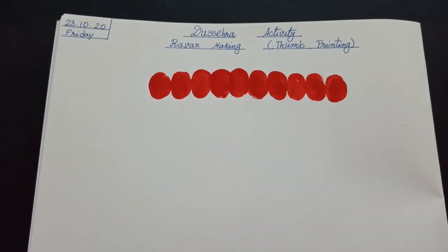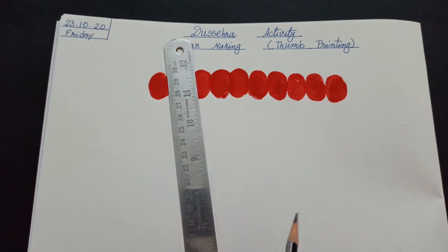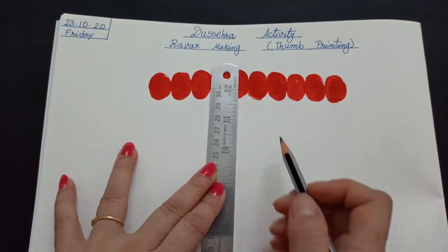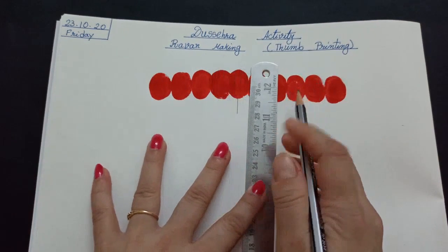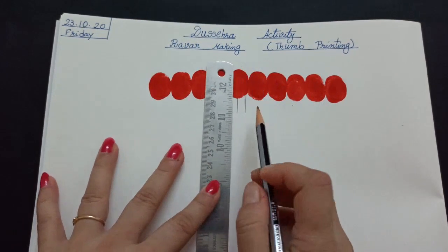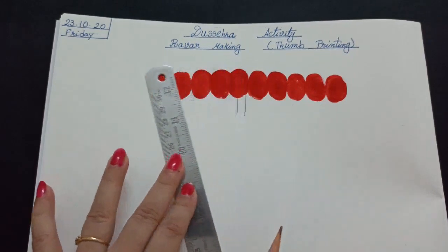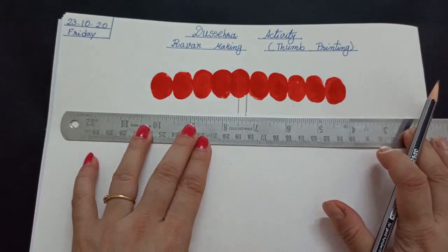In the meantime, let's make Ravan's body and his dress. For that, we need a scale and a pencil. So first make Ravan's neck. A standing line and a standing line. Two standing lines.